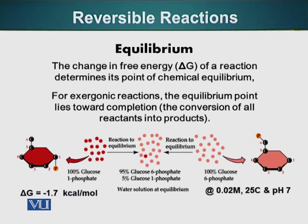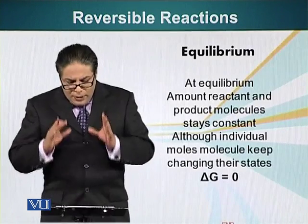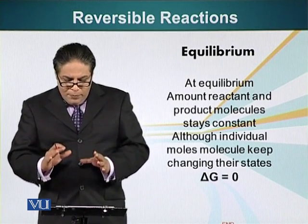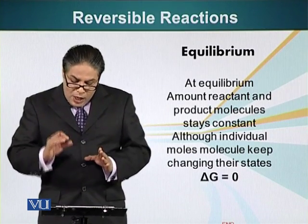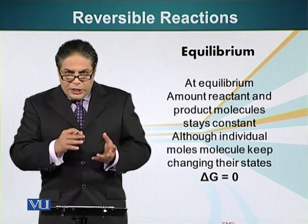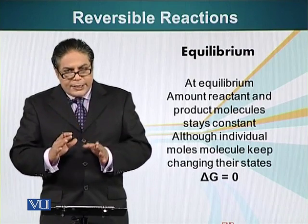This occurs at a specific temperature, molarity, and pH. Logically, if the conversion of glucose 1-phosphate to glucose 6-phosphate is exothermic, why don't all the glucose 1-phosphate molecules convert, since they are at a higher energy state? This is because we are looking at the system at a specific temperature — I will explain later how temperature determines the equilibrium point. To re-emphasize: at equilibrium the amounts of reactant and product molecules stay constant, although individual molecules keep converting between forms. At this state, delta G is zero.